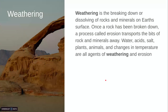Weathering. Weathering is the breaking down or dissolving of rocks and minerals on earth's surface. Once a rock has been broken down, a process called erosion transports the bits of rock and minerals away. Water, acid, salt, plants, and changes in temperature are all agents of weathering and erosion. So first the weathering breaks down the rocks, and after that erosion transports them to another place.